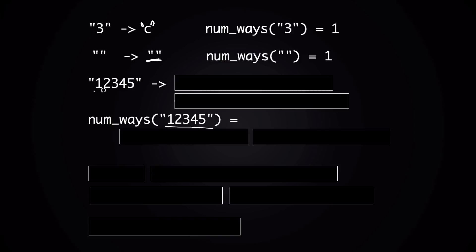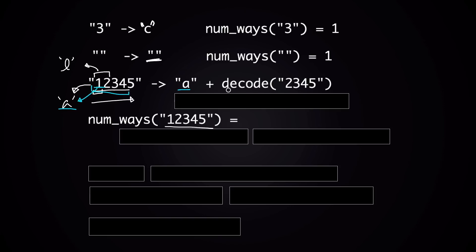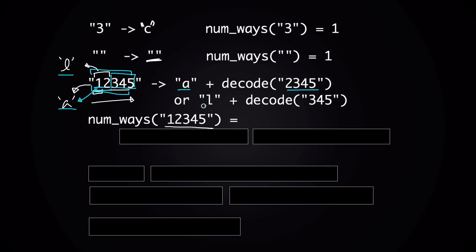Let's examine the input '12345'. We can think about decoding it from left to right sequentially. At the beginning there are two choices. The first is to look at the first letter, '1', by itself and decode it back to 'A', since A maps to 1. The second choice is to look at the first and second letters together, '12', and decode it back to 'L', since L maps to 12. If you go with the first choice and decode 1 to A, the whole message will be A combined with whatever you get by decoding the rest, '2345'.